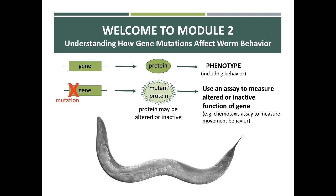Hello everyone and welcome to the Biology 211 lab. In this lab we will begin our second module, where we're going to learn how mutations affect the behavior of the microscopic worm C. elegans. Over the next couple of weeks in lab and lecture, we're going to look at the process of going from a gene to a protein and then observing a phenotype. When we generate a mutation in a gene, it will make a mutant protein with some altered phenotype. Sometimes this altered phenotype can be lethal to the organism, sometimes it can lead to a novel function, and sometimes mutations can have no effect at all.